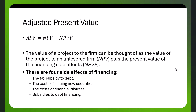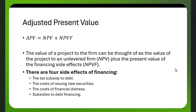There are four side effects of financing: a tax subsidy to debt, the costs of issuing new securities, the costs of financial distress, and subsidies to debt financing. You don't want to use an unlimited amount of debt because that increases the cost of financial distress or bankruptcy. But using debt has a big advantage because interest payments are tax deductible — the government is picking up a fraction of the interest costs.